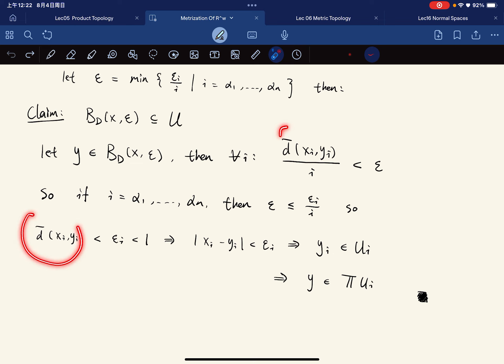ε is defined less than or equal to all the εᵢ over i. So this is less than or equal to εᵢ over i. We define that so that the i can cancel out.